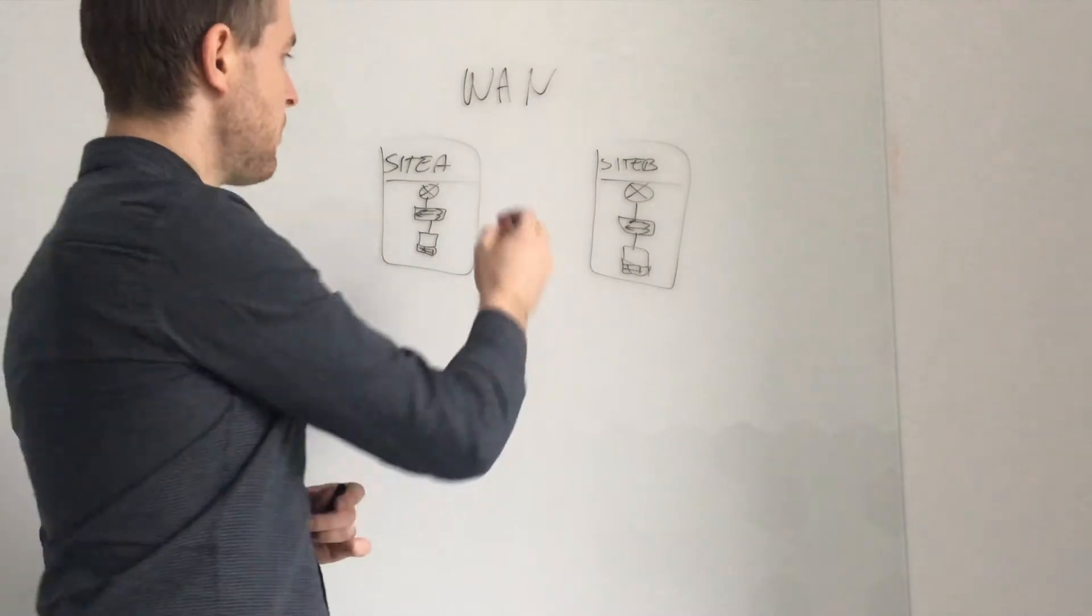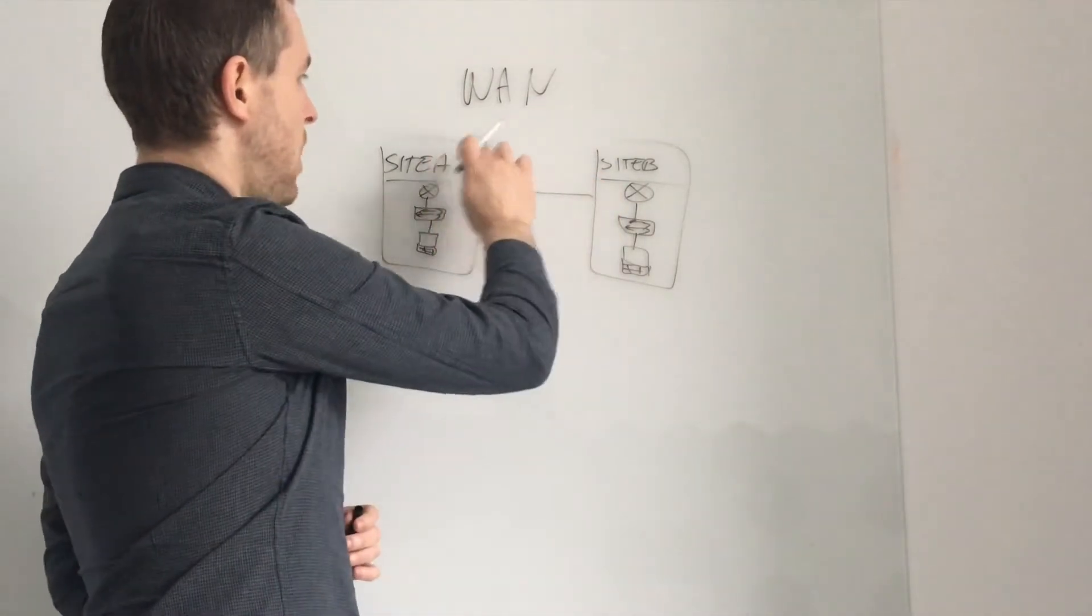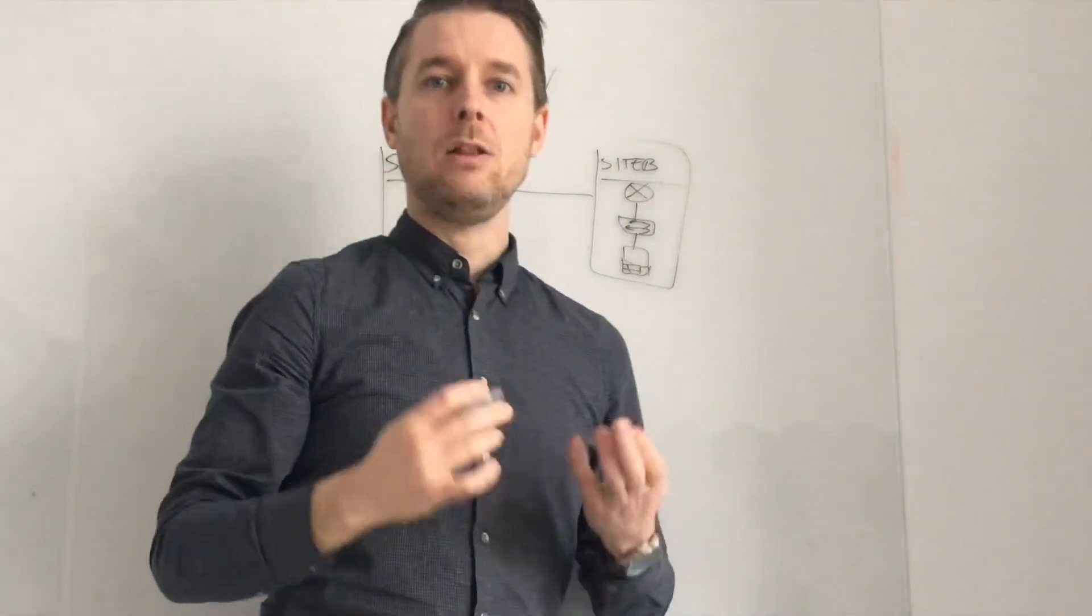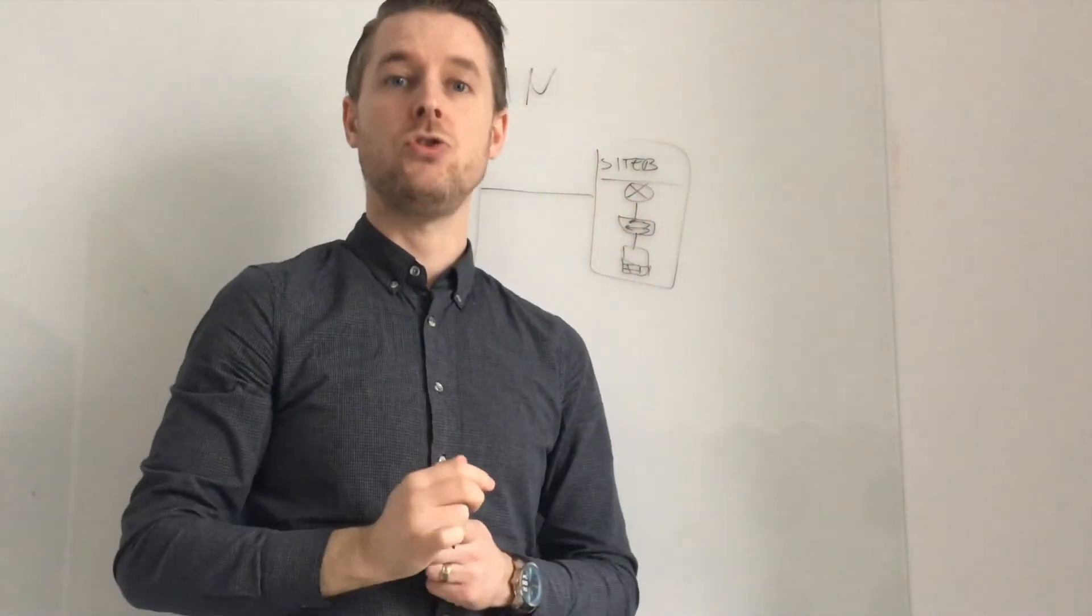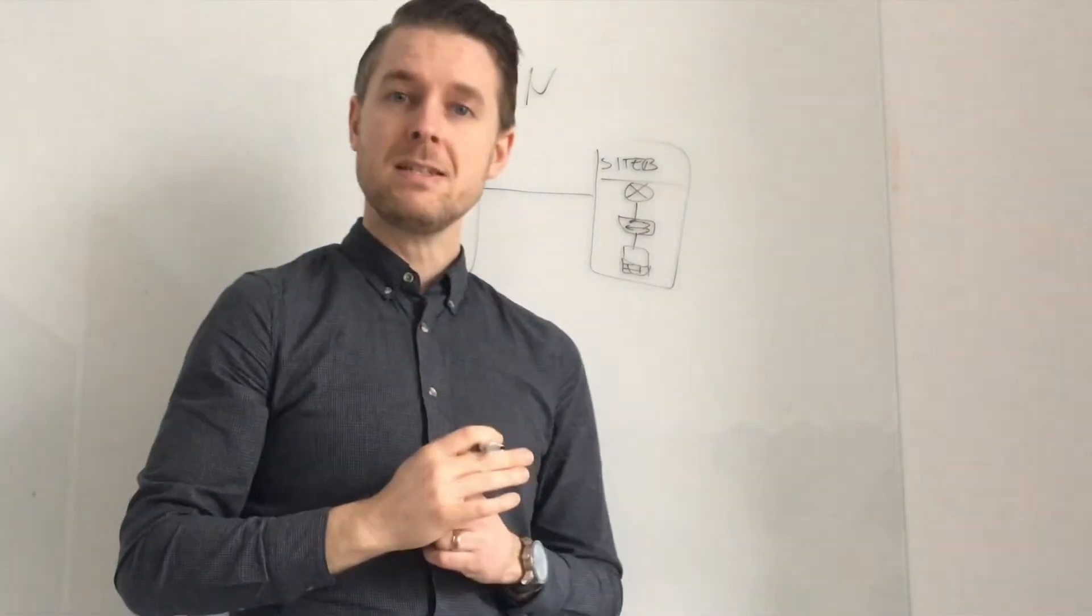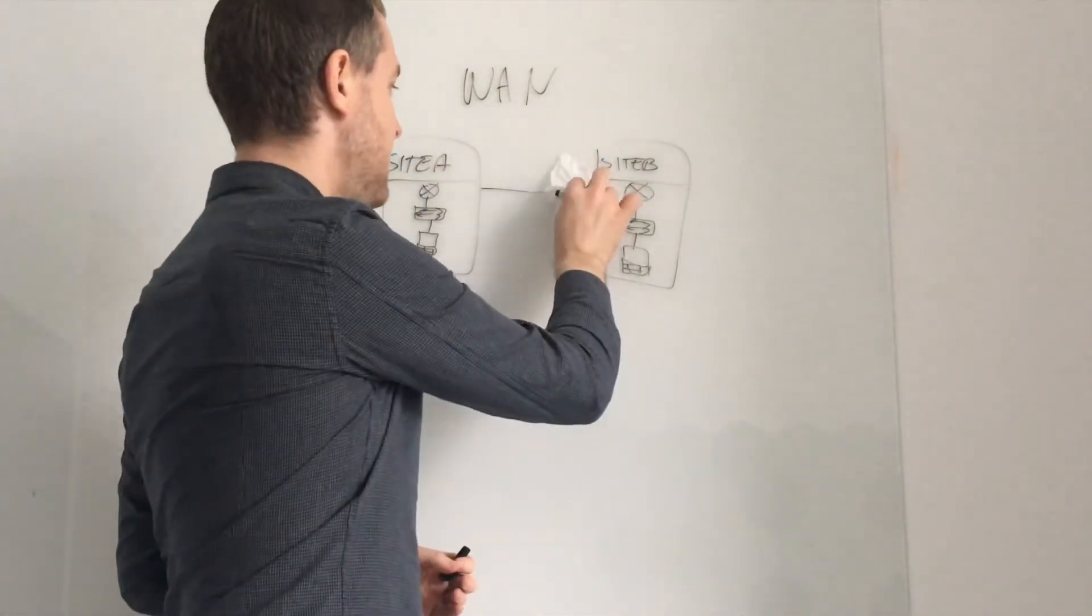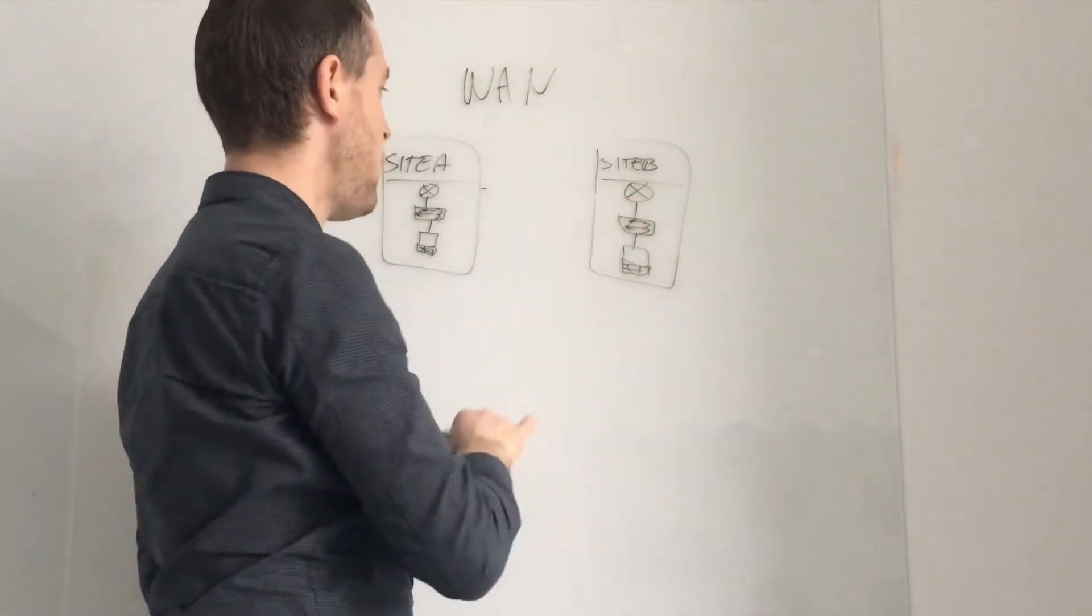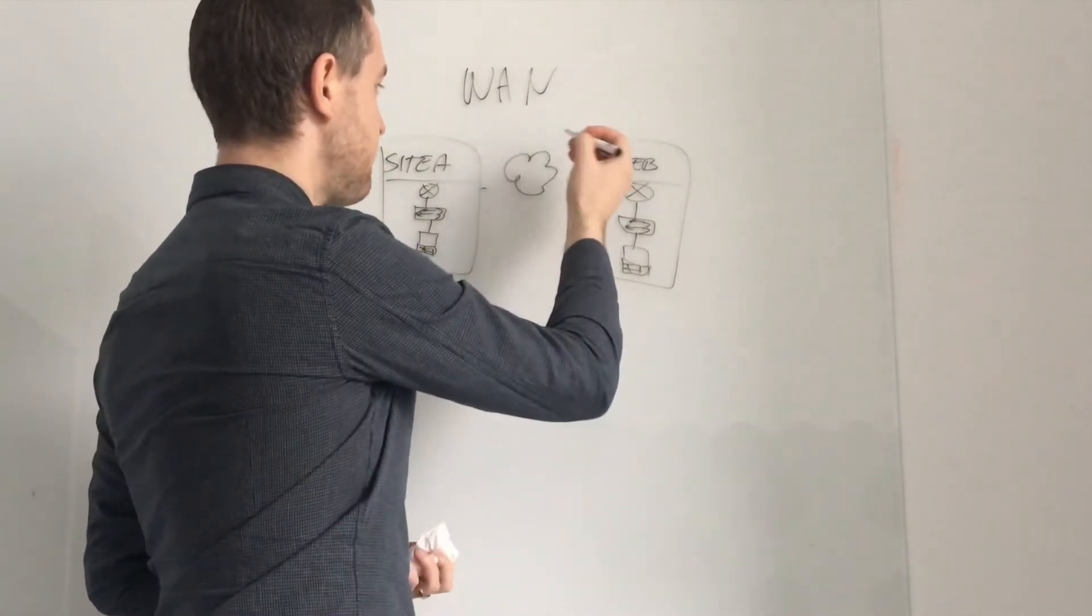Now between these two you're going to have a connection. This connection from site A to site B could be a local connection using a direct link between your two sites. This can be something that's set up between a service provider and the business for example. In most scenarios you're going to have some sort of internet link. So between here you would have your internet.